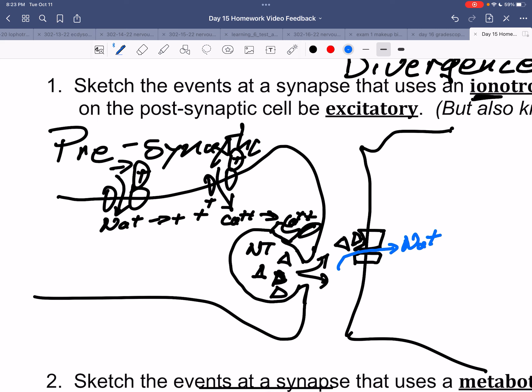Sodium, if it's excitatory, sodium comes in. So we wanted our postsynaptic cell to be excitatory. Here's the postsynaptic cell. And that makes it more likely that we're going to open voltage-gated sodium channels. In the new cell, sodium comes in and can start a new action potential.